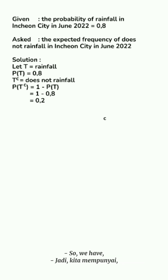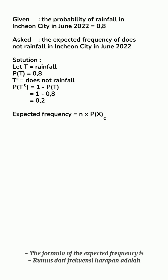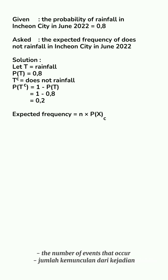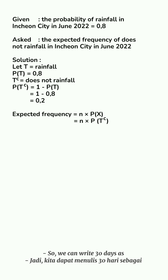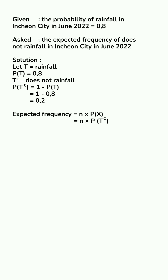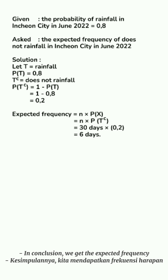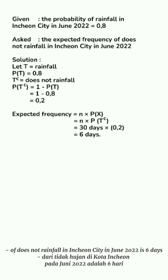Therefore, P(T complement) = 1 − P(T) = 1 − 0.8 = 0.2. The formula of expected frequency is: probability of an event multiplied by the number of events. In Yuna's case, the days of the month is the number of events (n = 30 days). So n × P(T complement) = 30 × 0.2 = 6. In conclusion, the expected frequency of 'does not rain' in June 2022 is 6 days.